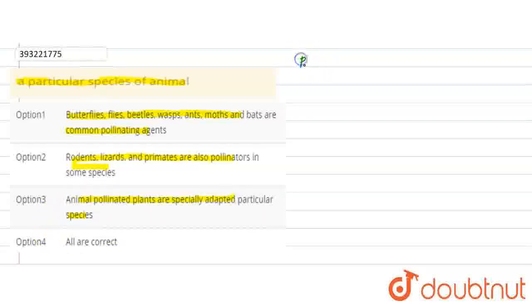Here we are talking about the process of pollination. What is pollination? Pollination is the transfer of pollen grains. The pollen grains transfer from anthers to stigma. This is the process of pollination.